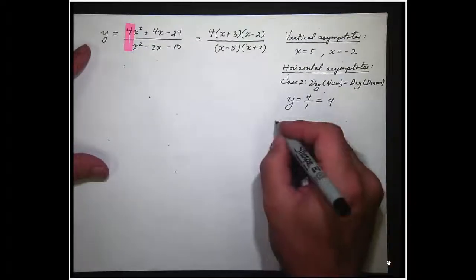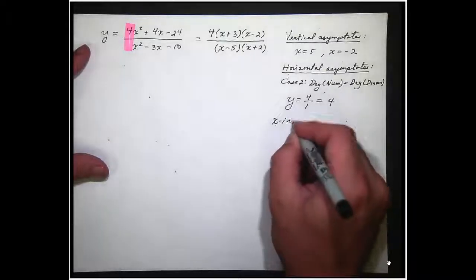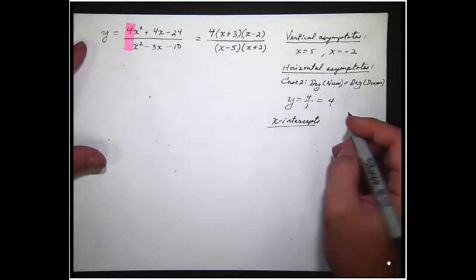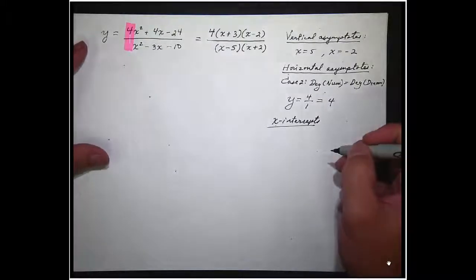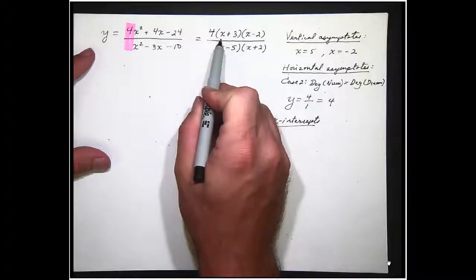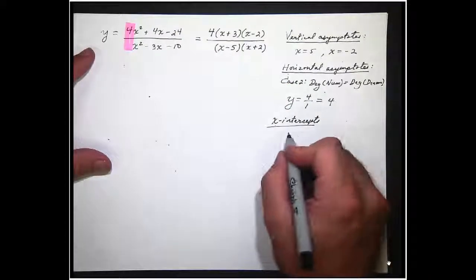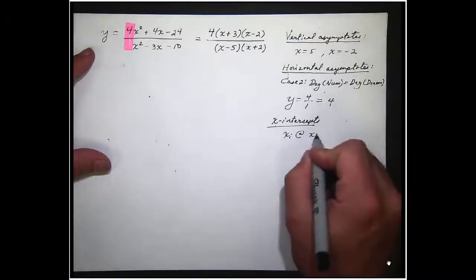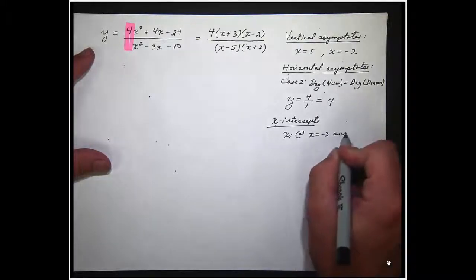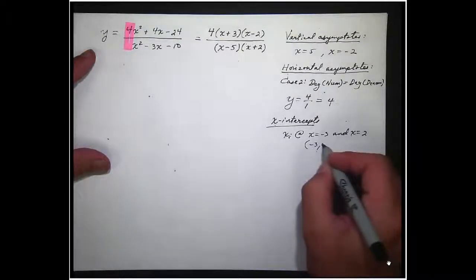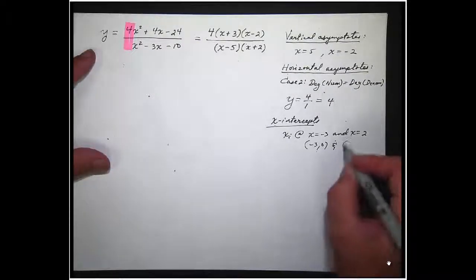Next we're going to do the x-intercepts. X-intercepts are found at the unshared zeros of the numerator. The unshared zeros, there are no shared zeros here. Negative 3 makes that equal 0. 2 makes that equal 0. So we have x-intercepts at x equals negative 3 and at x equals 2. So that's negative 3 comma 0 and 2 comma 0.